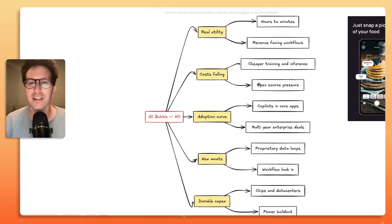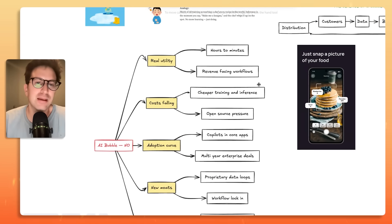So let's move on to if it isn't an AI bubble. What are the arguments for it's not an AI bubble? The first one is real utility. So a lot of people are downloading apps, buying B2B software, and it's taking tasks that they would take hours to do into minutes. There's also revenue-facing workflows.